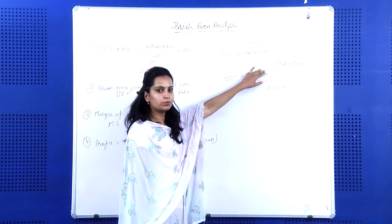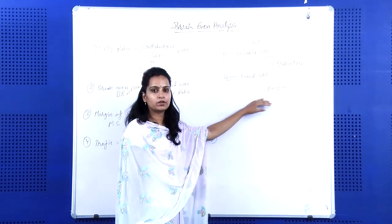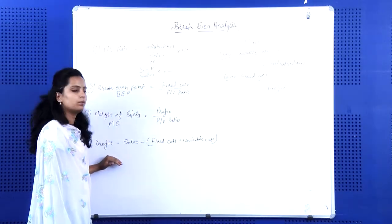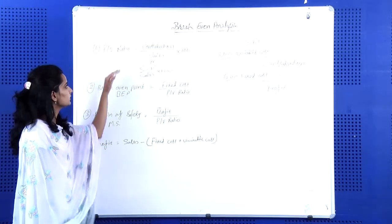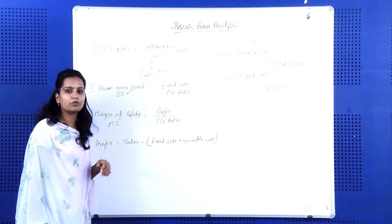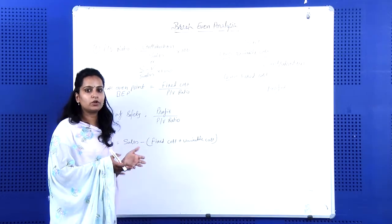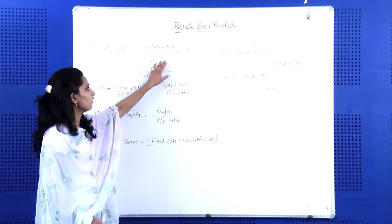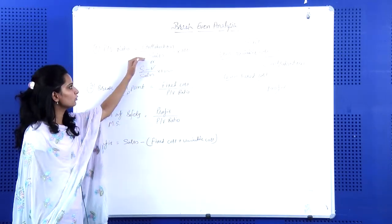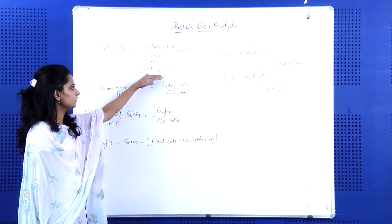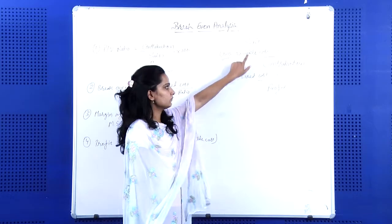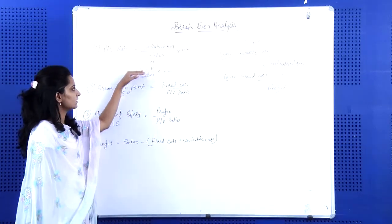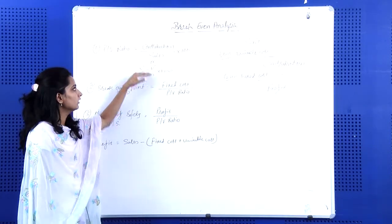The structure is: sales less variable cost gives us contribution, and less fixed cost gives profit. For break-even analysis there are four formulas. The first is PV Ratio — Profit Volume Ratio — which shows the volume of profit on sales. The formula for PV Ratio is contribution divided by sales, that is (Sales minus Variable Cost) divided by Sales, multiplied by 100.